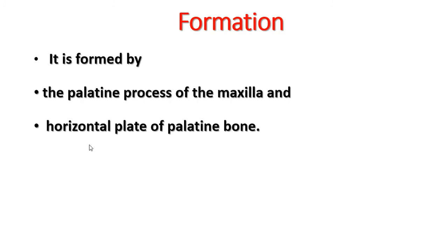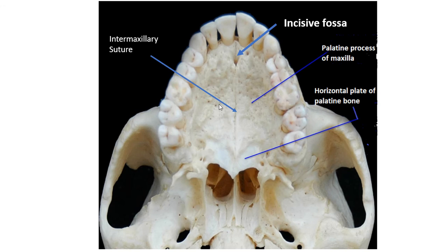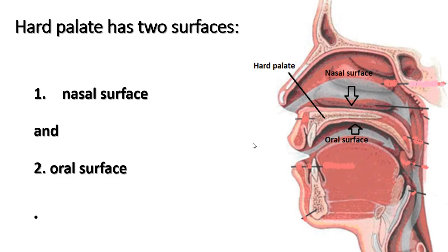The hard palate is formed by the palatine process of the maxilla and the horizontal plates of the palatine bone. This is one palatine process of the maxilla, this is another palatine process of the maxilla, and these are the horizontal plates of the palatine bones. These bones are united at the intermaxillary suture.